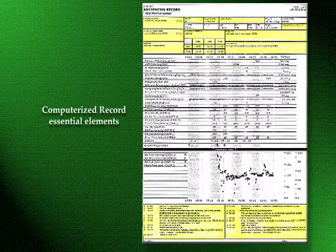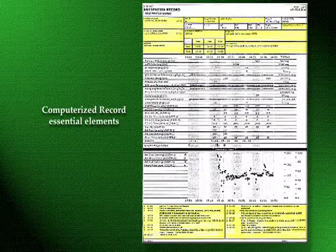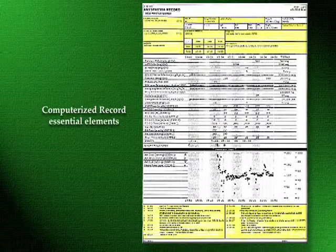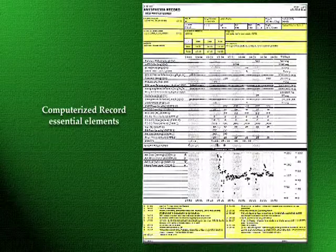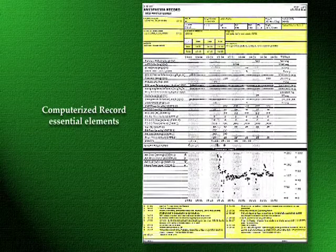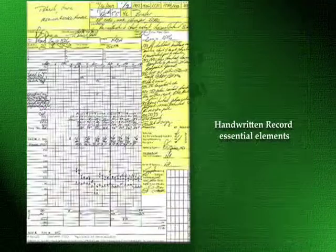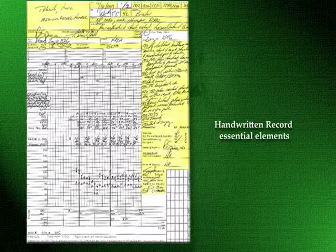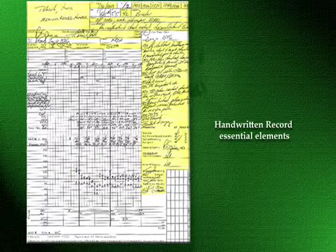Additional benefits of computerized record keeping have resulted from customization of the record keeping software, or through the creation of large databases of patient information. When properly configured, computerized systems may produce a record that captures essential billing elements, and is more complete and legible than comparable handwritten records, particularly when errors of omission occur at times of high workload, such as during induction or emergence.